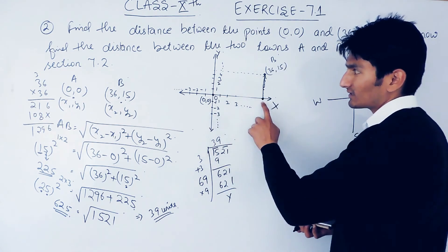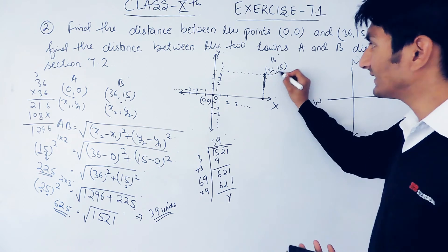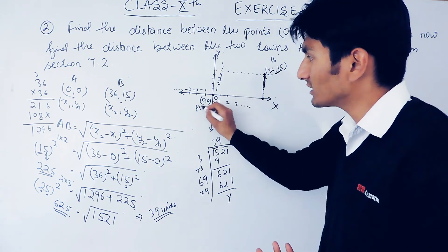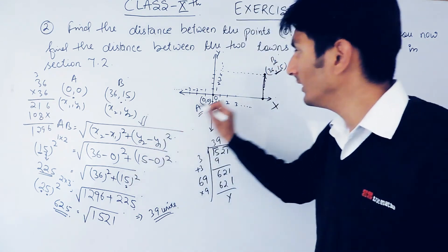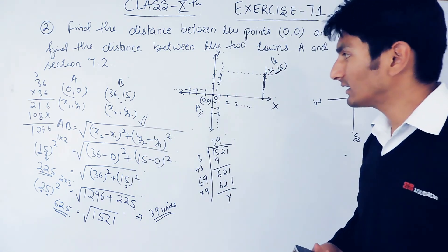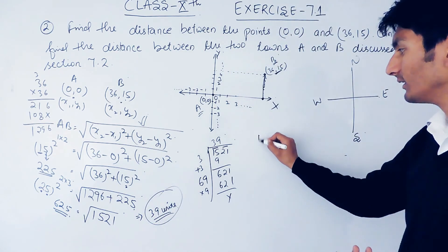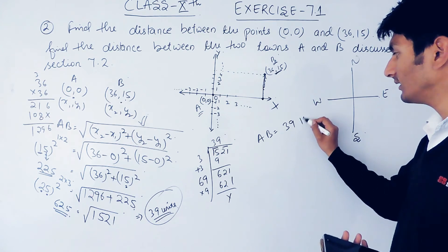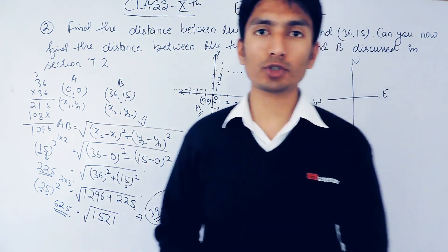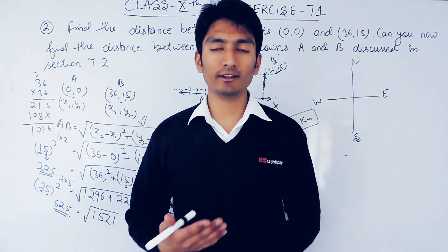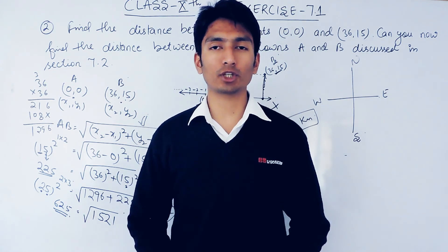Town B is at 36 kilometers east and 15 kilometers north. The coordinates are the same as the previous part, so using the same formula the distance between town A and town B is 39 kilometers. I hope you understood this. If you like this video please subscribe to our channel. If you have any problem with maths you can contact us — our phone number, email address, and WhatsApp number are given in the description. Thank you.